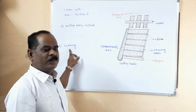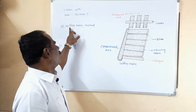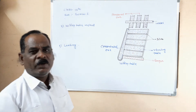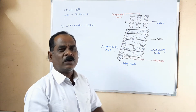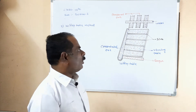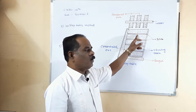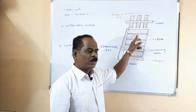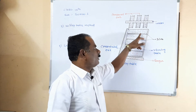First, let us understand how to concentrate the ore by Wilfley table method. In the Wilfley table method, Wilfley tables are used. What is the construction of a Wilfley table? It consists of narrow thin wooden riffles fixed in an inclined position on the table.